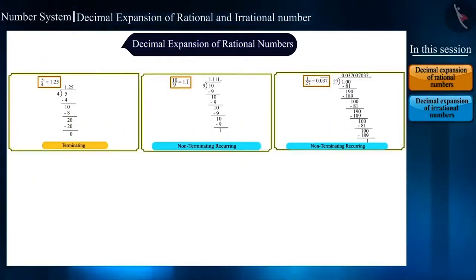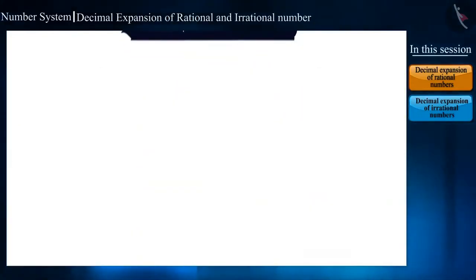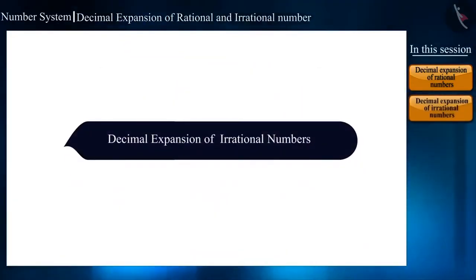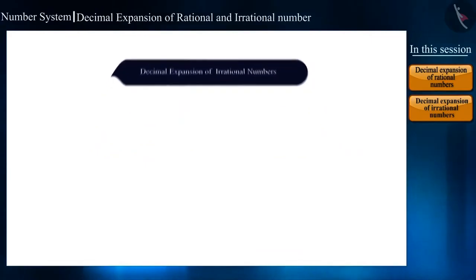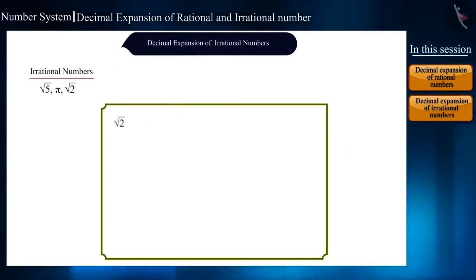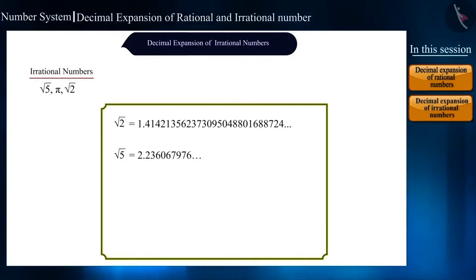Friends, so far we have seen the decimal expansion of rational numbers. Can we write irrational numbers also like this? The decimal expansion of root 2 and root 5 is as follows. If you look at them carefully, the numbers are neither being repeated here nor are they ending. Likewise, we can find many irrational numbers and write their decimal expansion.